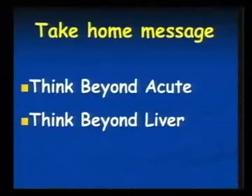Take-home message: when you have an acute presentation, think beyond acute. If you have an underlying firm liver, think beyond acute — maybe an underlying chronic liver disease with an acute presentation. If you have liver involvement, think beyond liver. It may be a systemic disease presenting as liver disease, or the liver may be going into complications like fulminant hepatitis, hemophagocytic syndrome, and hepatorenal shutdown. Thank you.